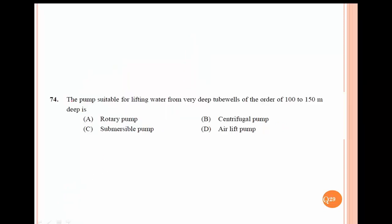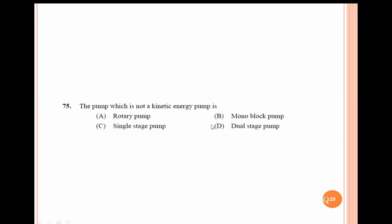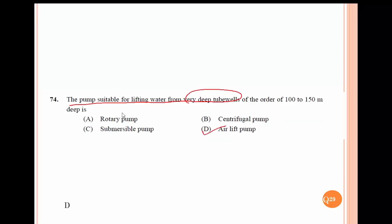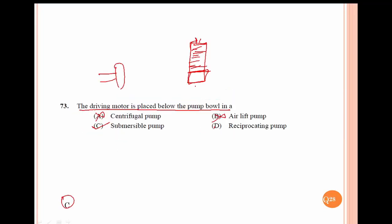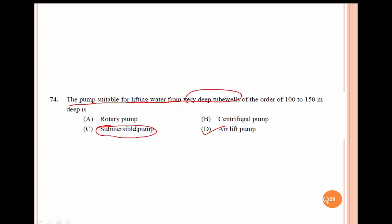The submersible pump is suitable for lifting water from a very deep tube well. The submersible pump is actually a multi-stage centrifugal pump. It has a multi-stage centrifugal turbine arrangement.